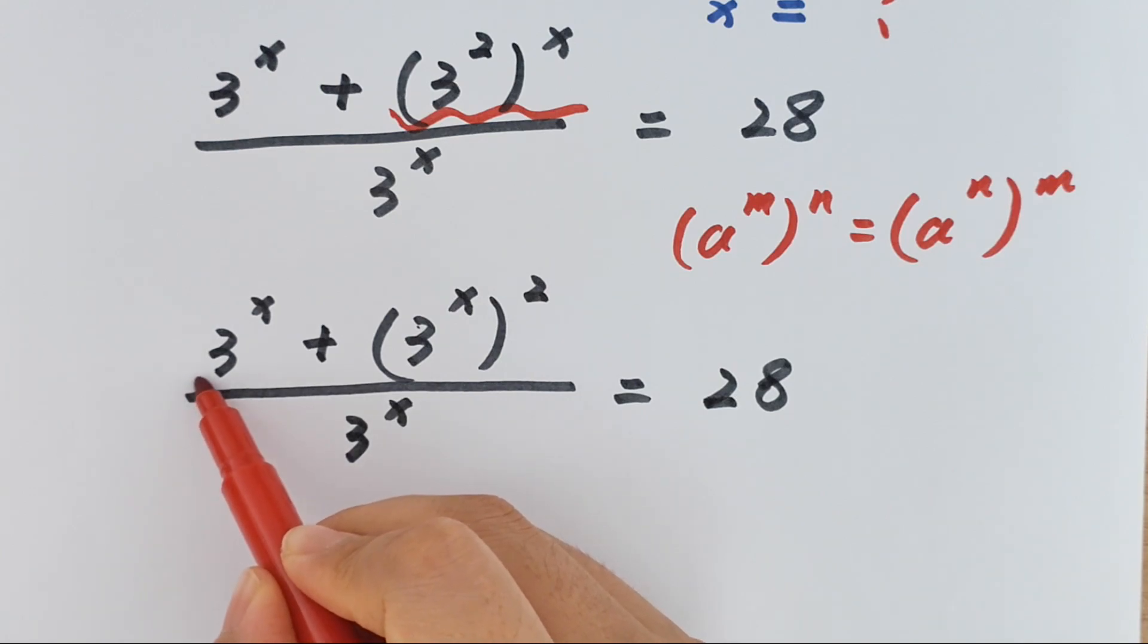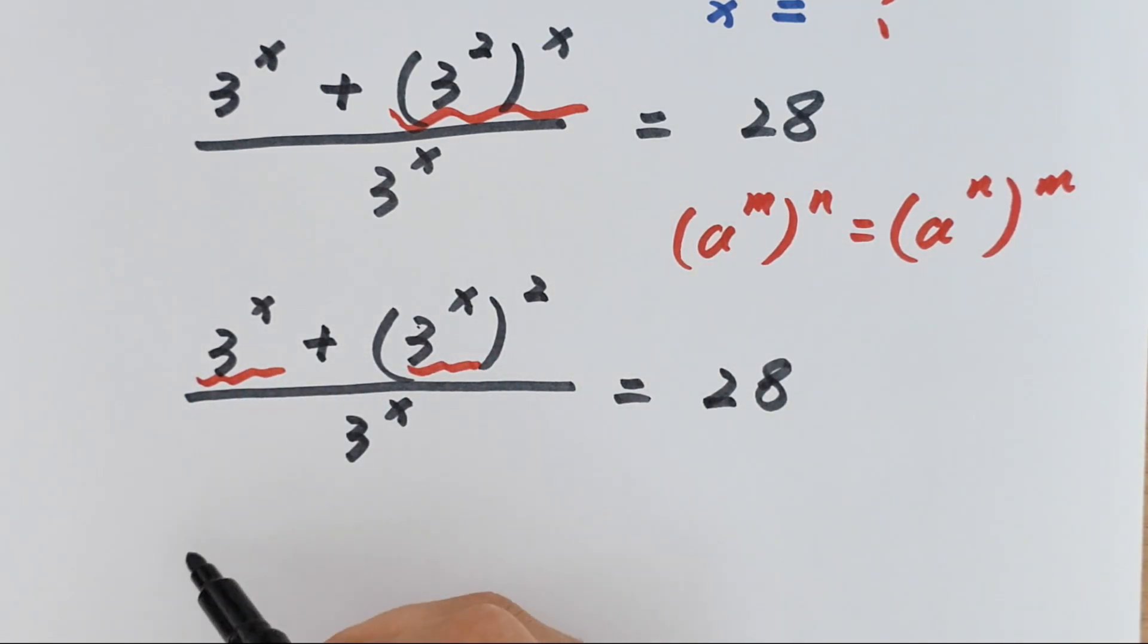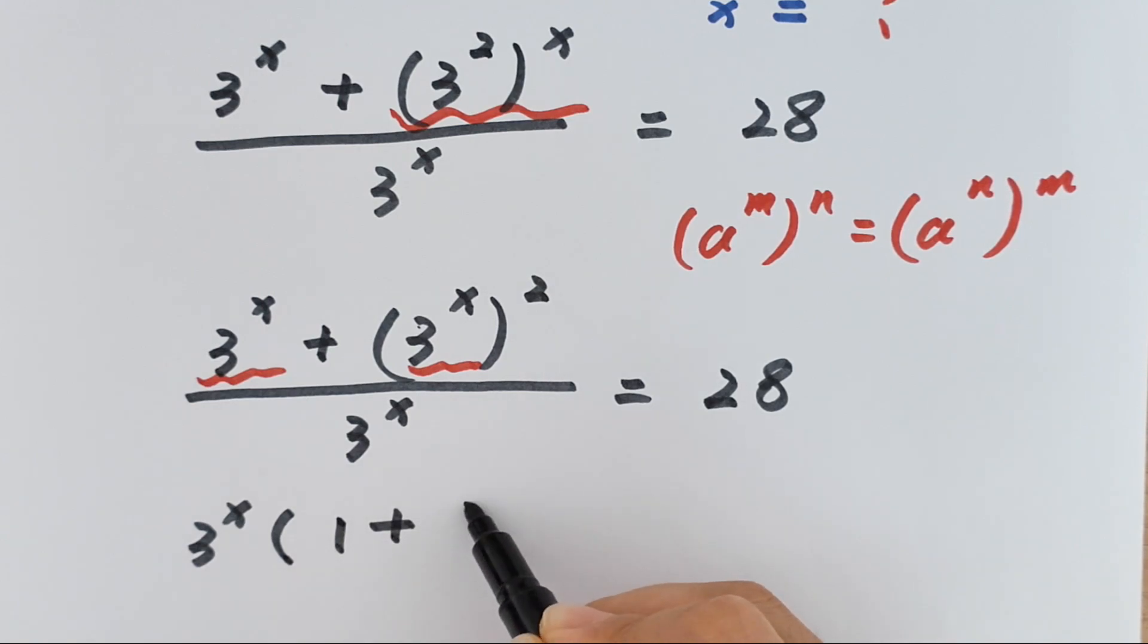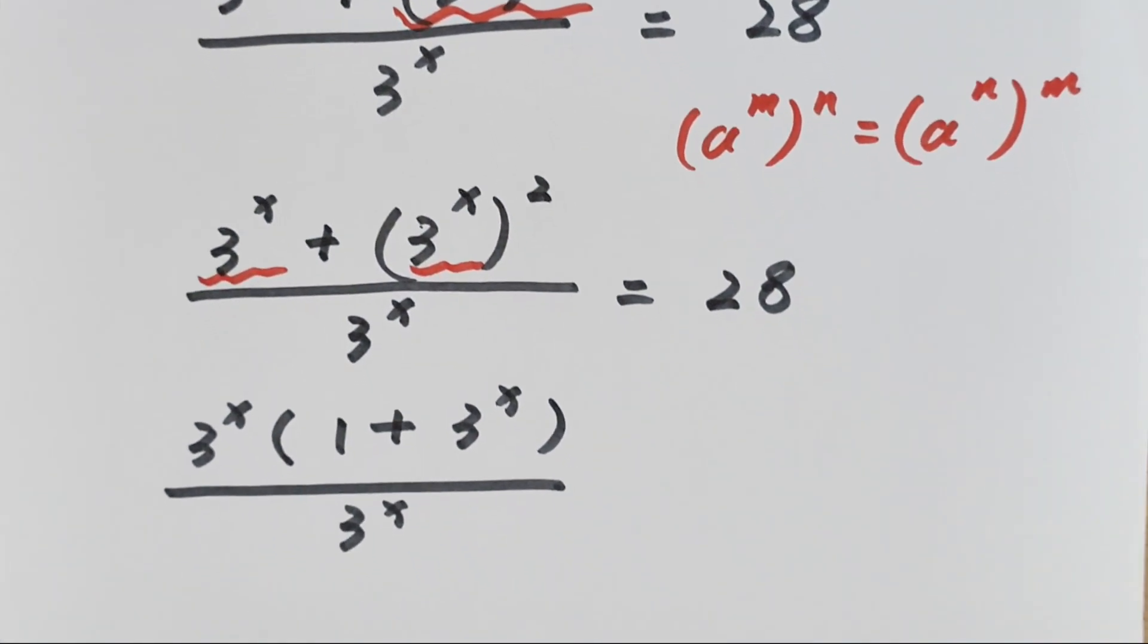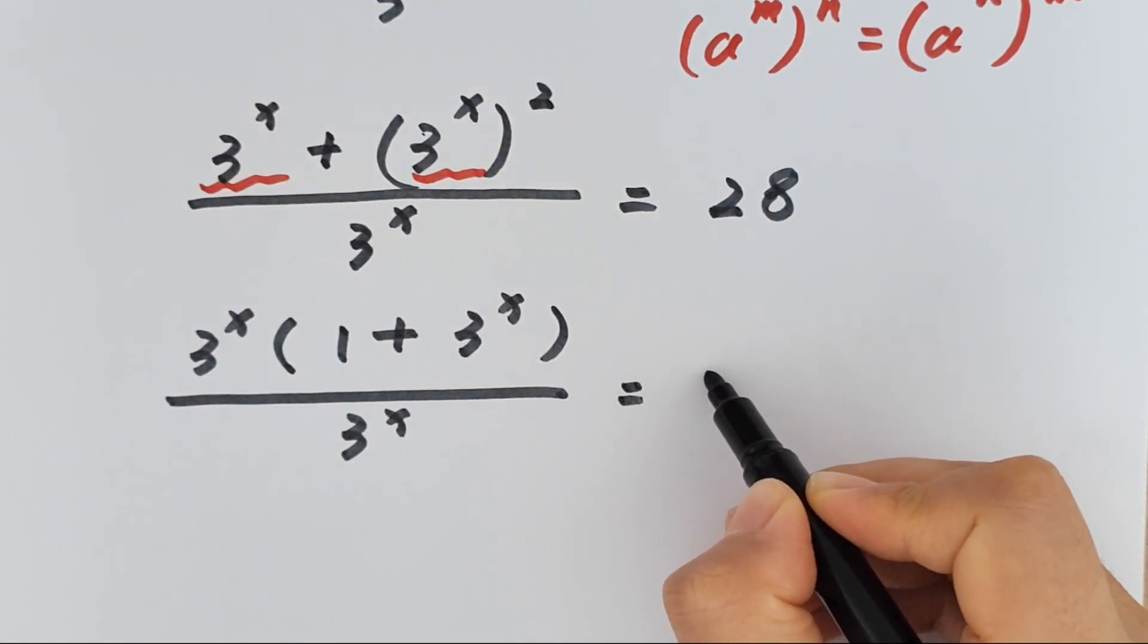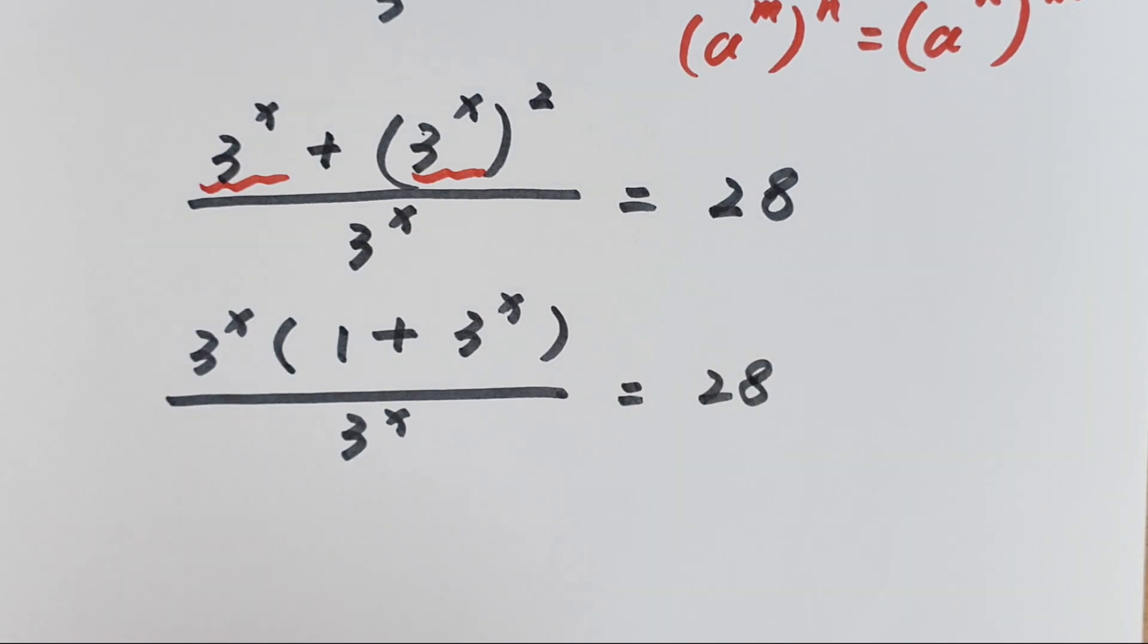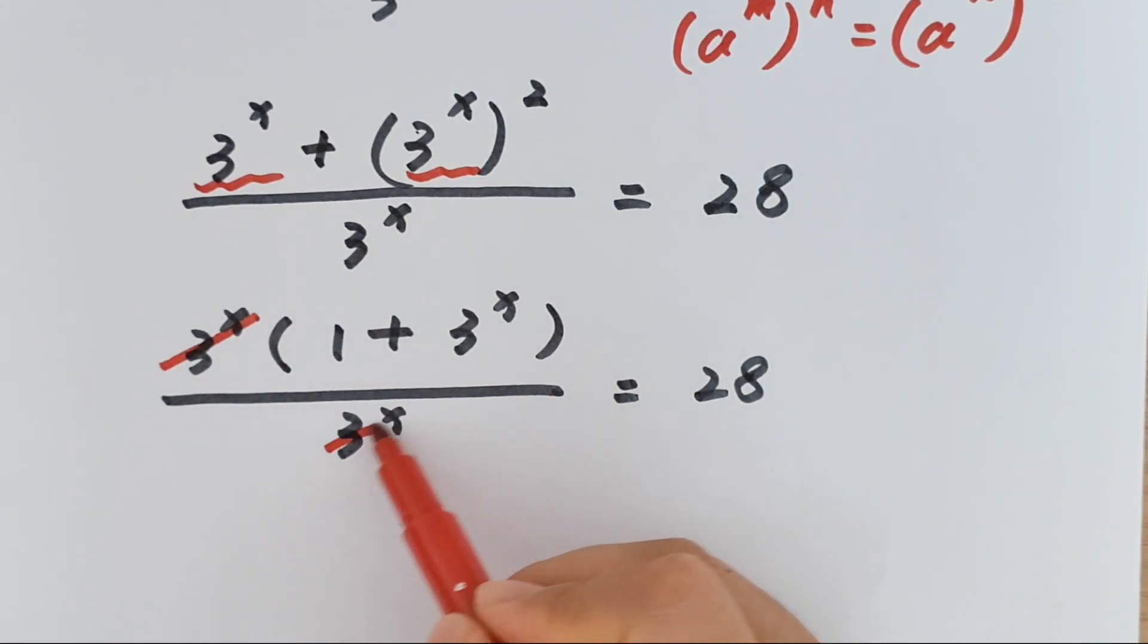Now 3 to the power of x is common. So we take this out of the bracket times 1 plus 3 to the power of x divided by 3 to the power of x equals 28. Now this will cancel with this.